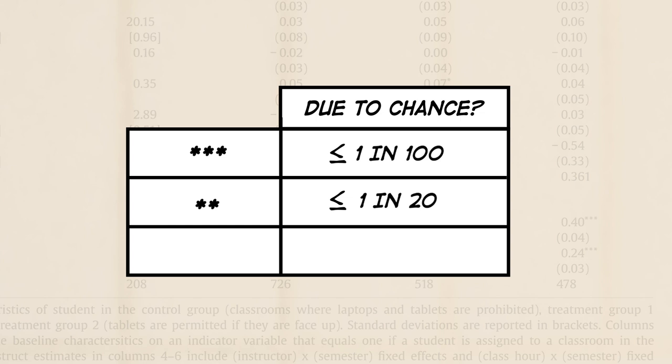Two stars indicate a 1 in 20, or 5% chance, of a chance finding. And one star denotes results we might see as often as 10% of the time merely due to chance.